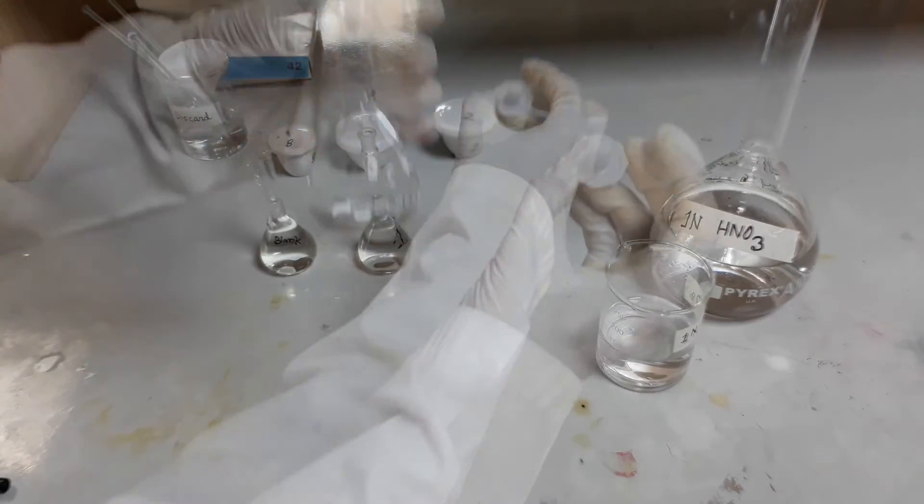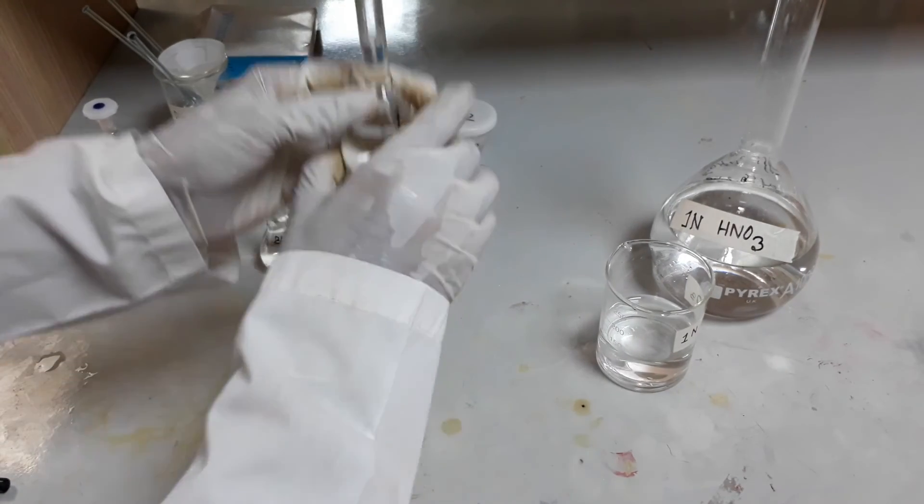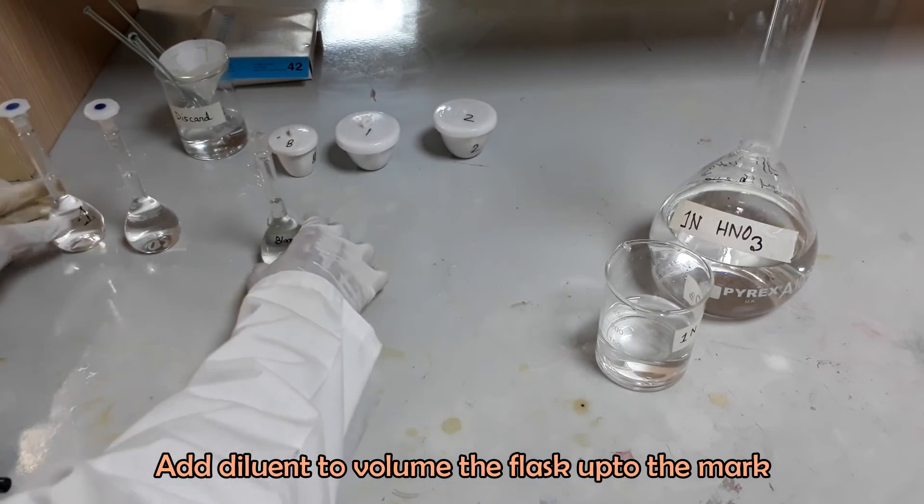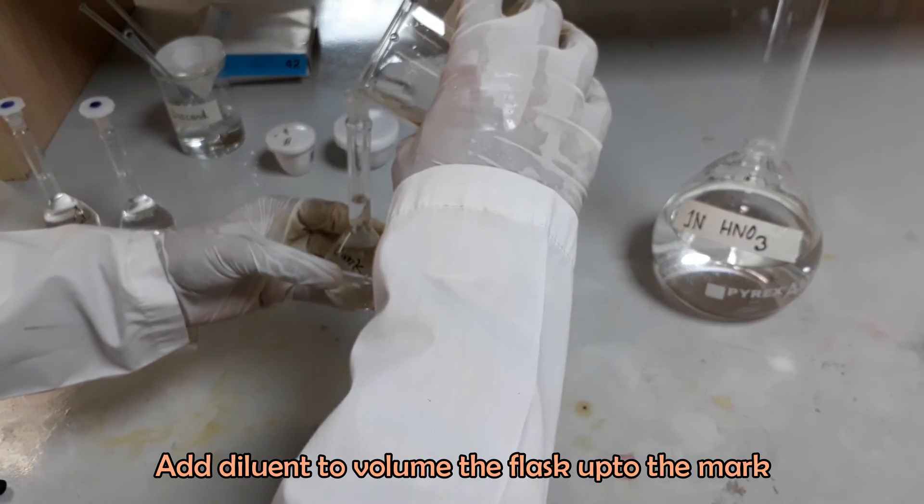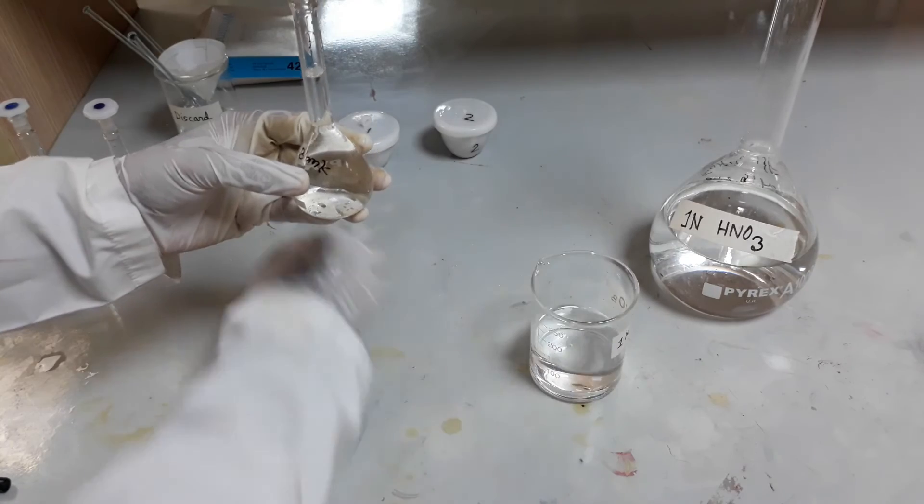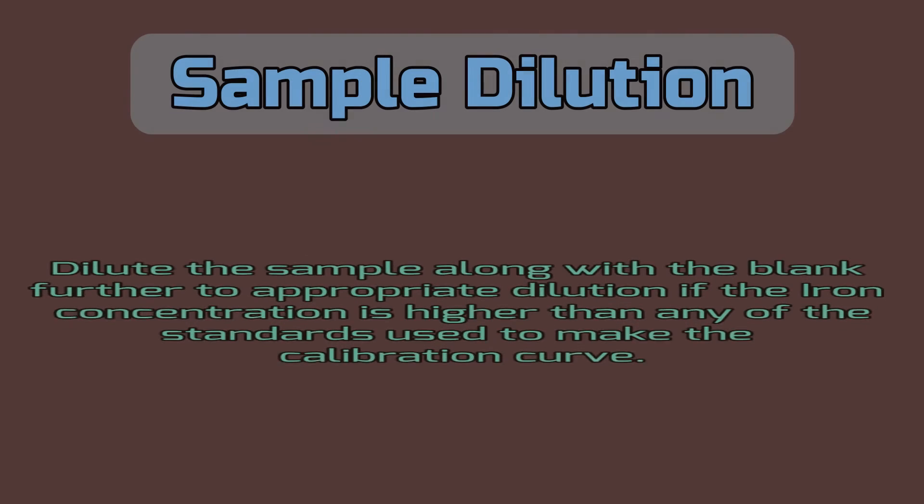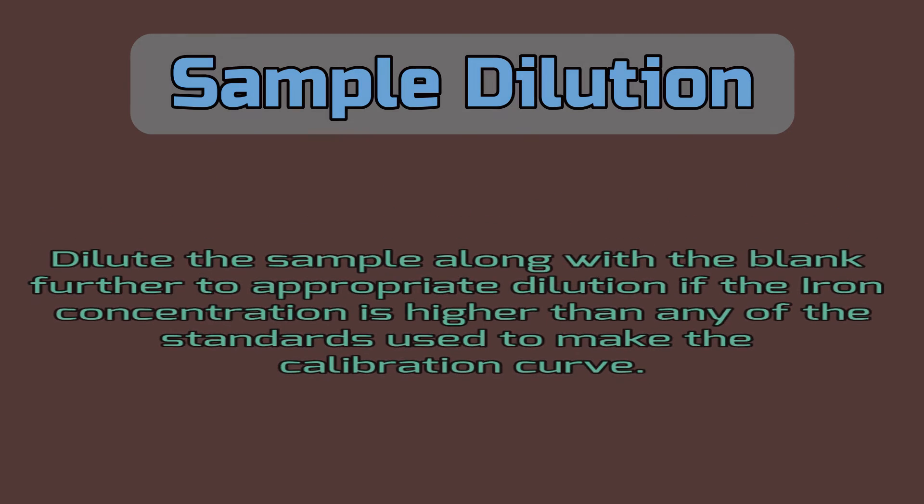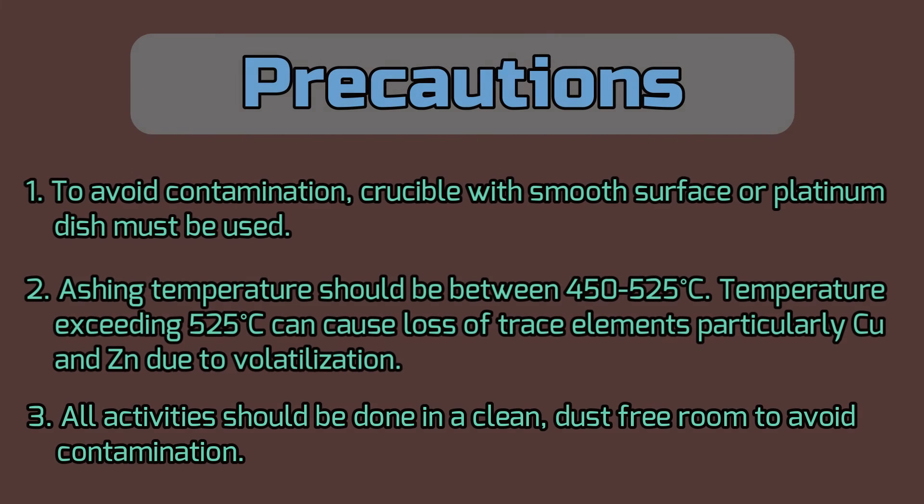Take the solution level of the volumetric flasks. Level up to the mark with diluent if needed. Our sample is now ready for analysis in AAS. Dilute the sample along with the blank if necessary to the appropriate dilution if the iron concentration is higher than any other standards used to make the calibration curve.